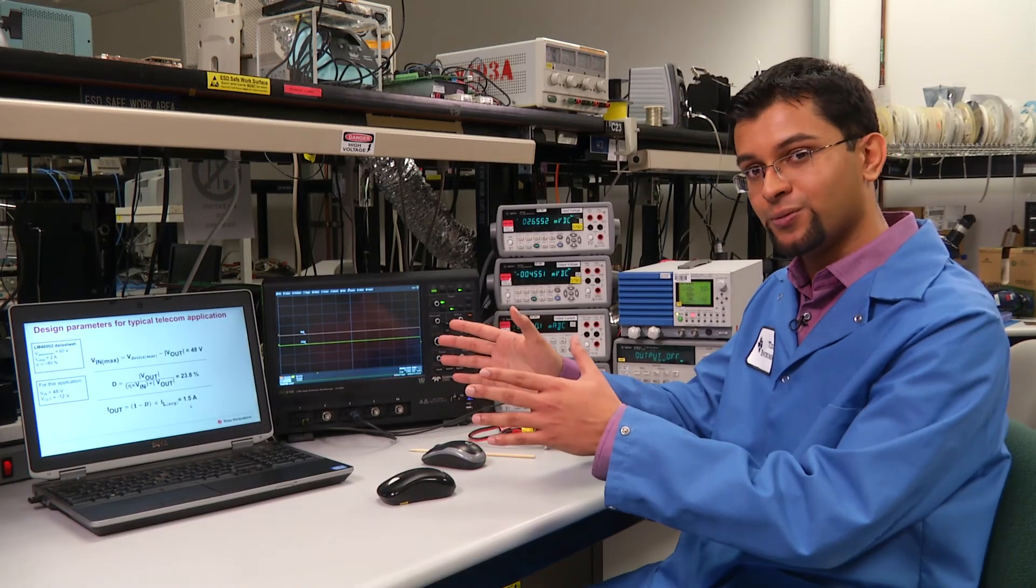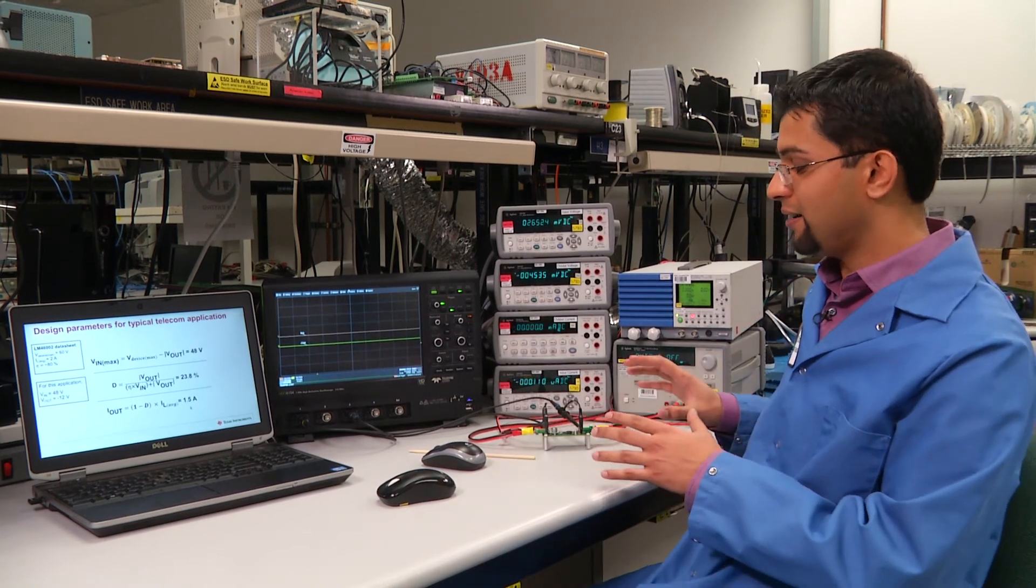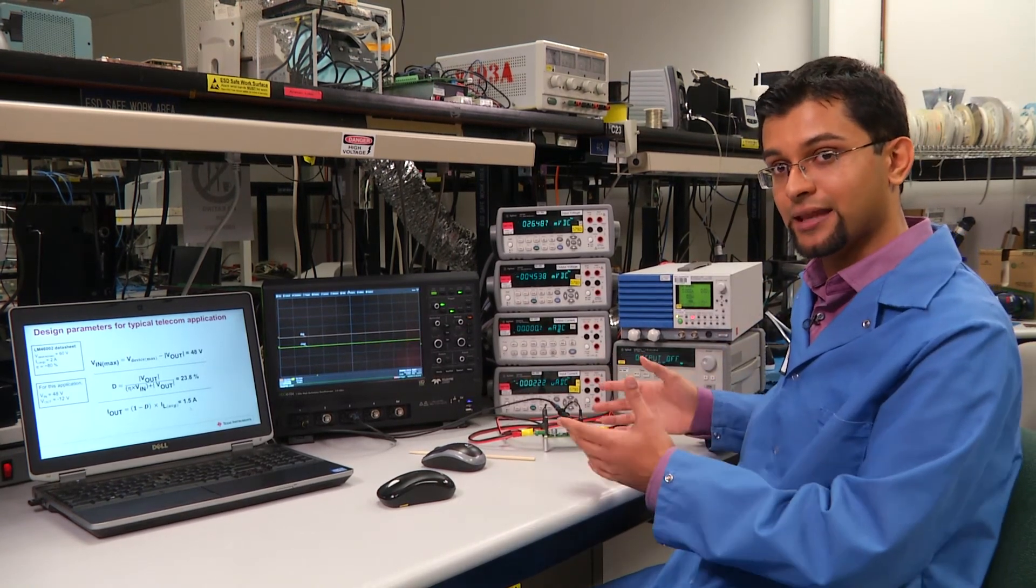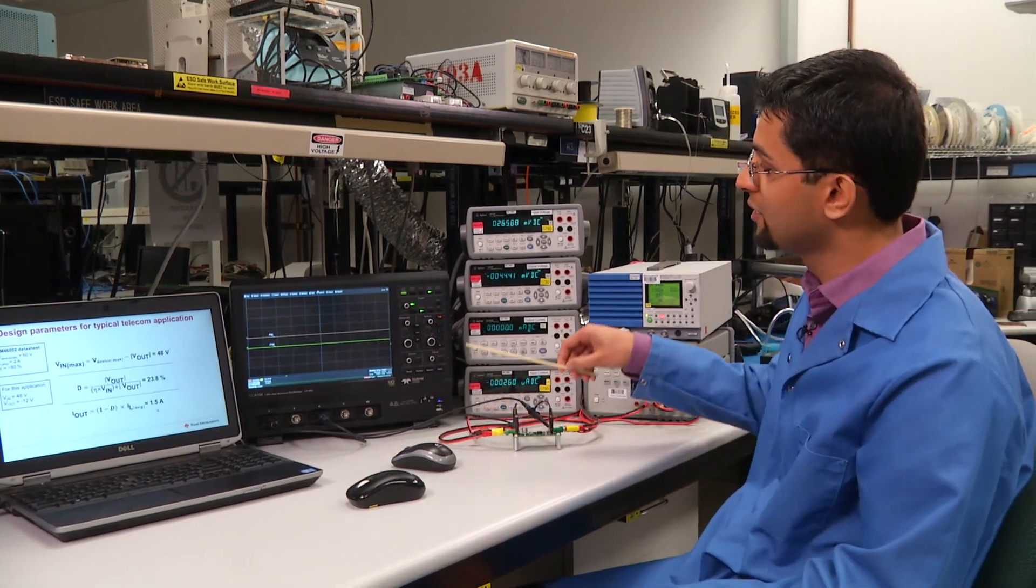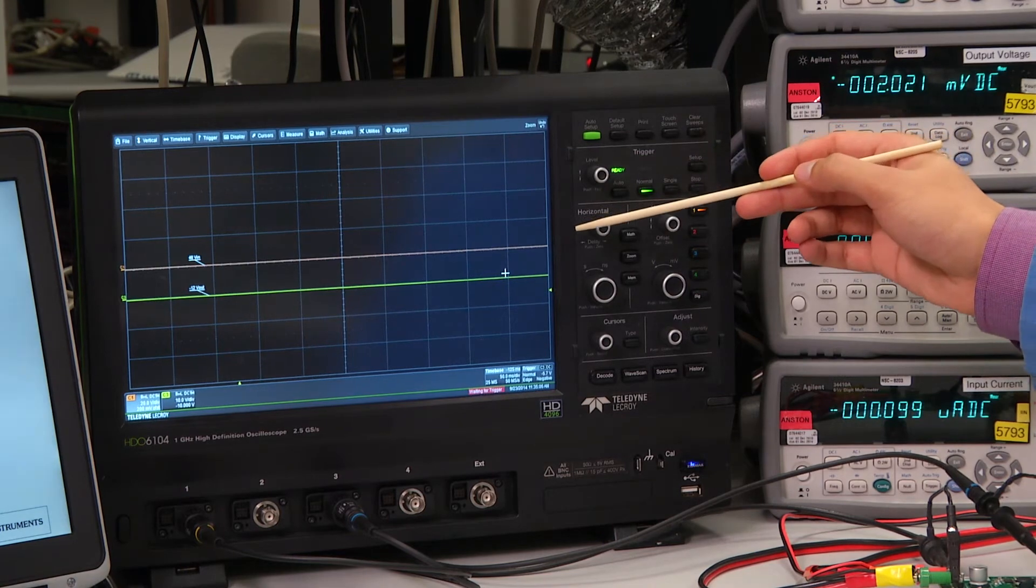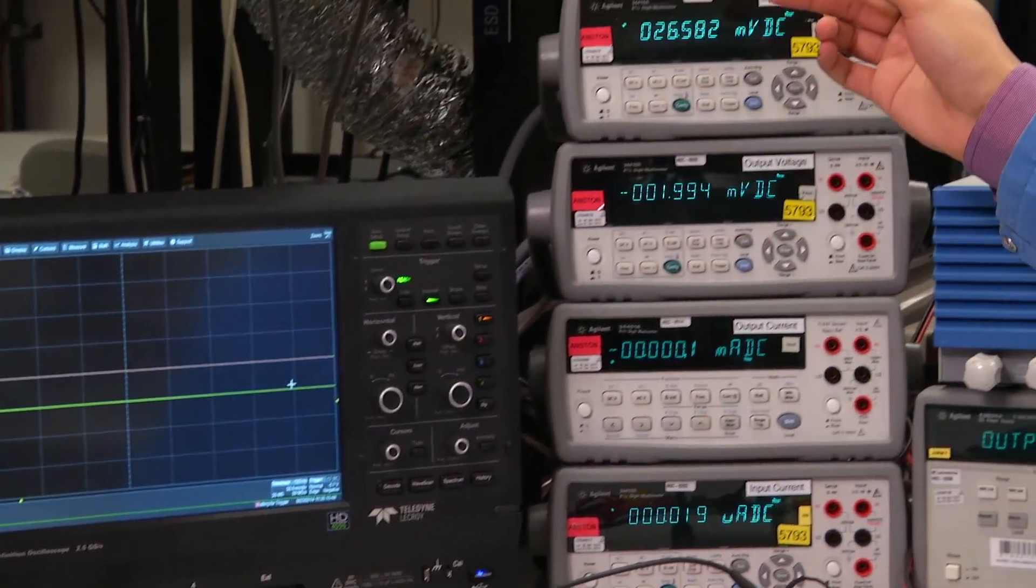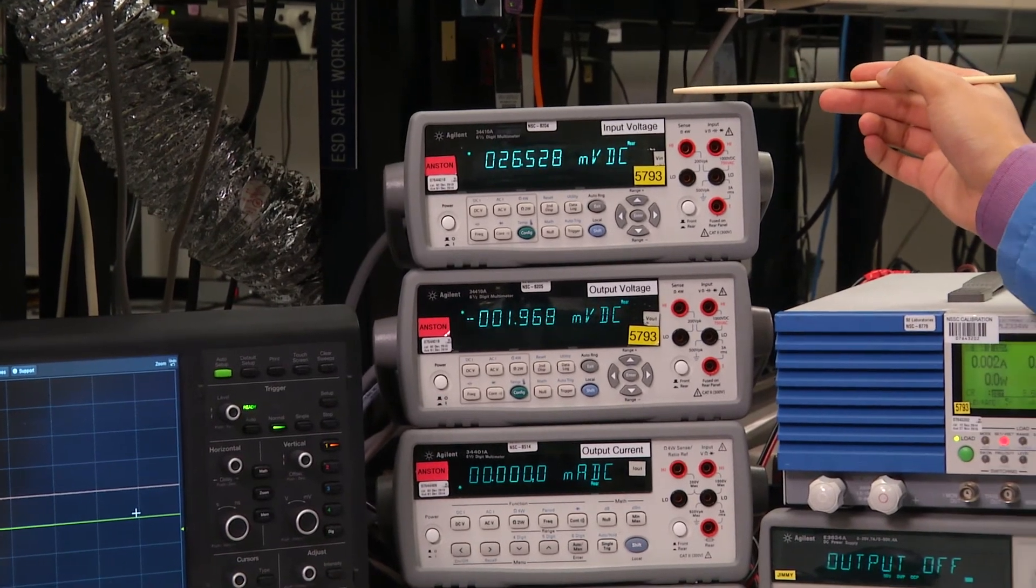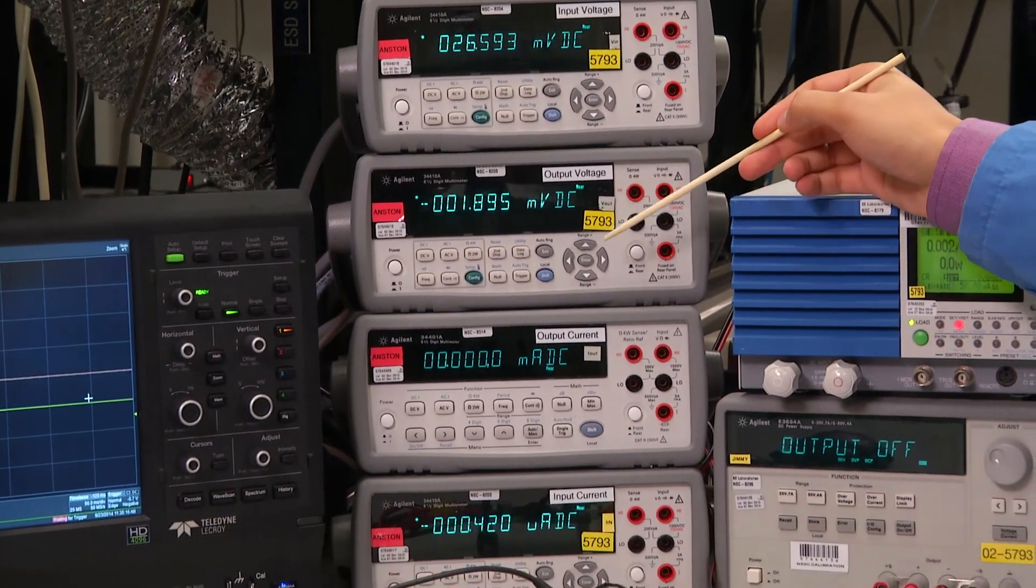Now that I've shown you the design example, let's take a look at a real EVM that we can practically showcase this experiment. We've got a scope here that shows us the input and the output voltage rails. To my right, we've got meters that show us the input voltage, the output voltage and the output current.